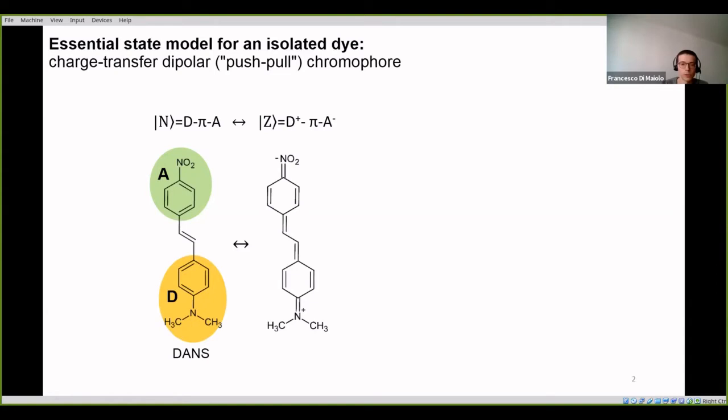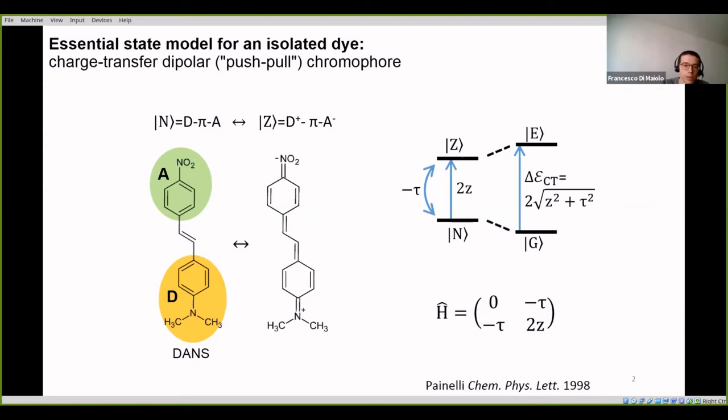These molecules resonate between two main structures, a neutral one and a charge-separated one. So, you can think that the easiest way to describe the electronic structure of this system is to account for a two-level Hamiltonian. You can analytically diagonalize this Hamiltonian, and you get the two eigenstates, so the ground state and the excited state.